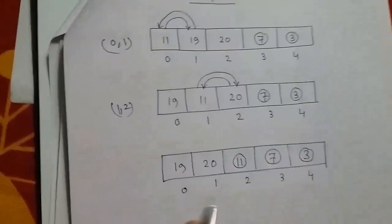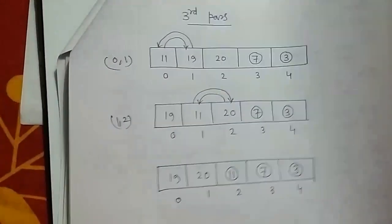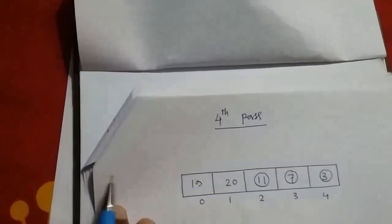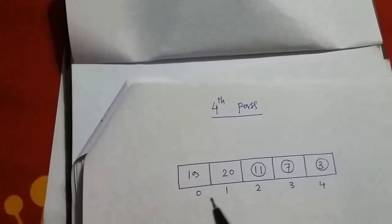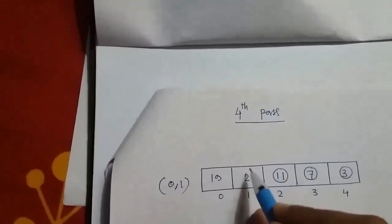After the end of the third pass, we have got the third smallest element fixed. Now let us move to the fourth pass. This is the resultant array after the end of the third pass. Only one pair of elements is left — that is 19 and 20 positioned at index 0 and 1 respectively. You can see 19 is smaller than 20, so they will be swapped.